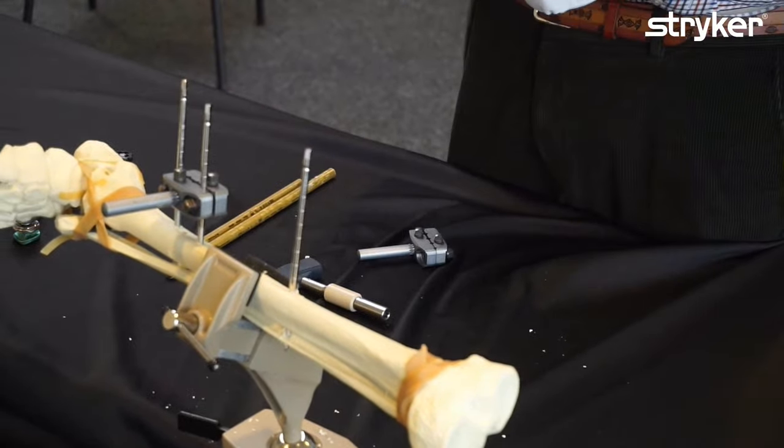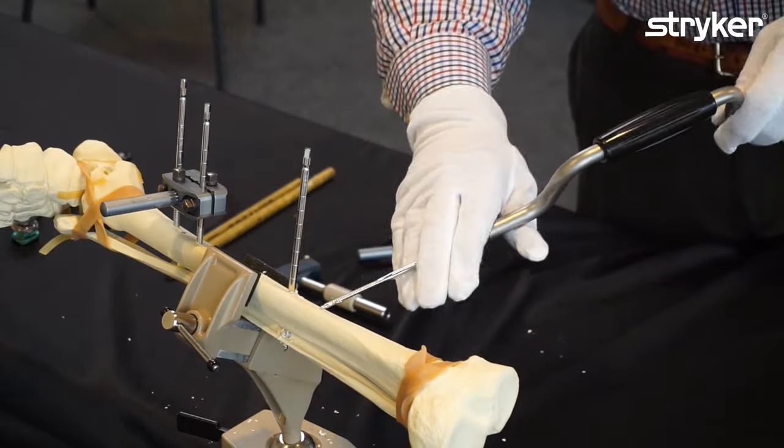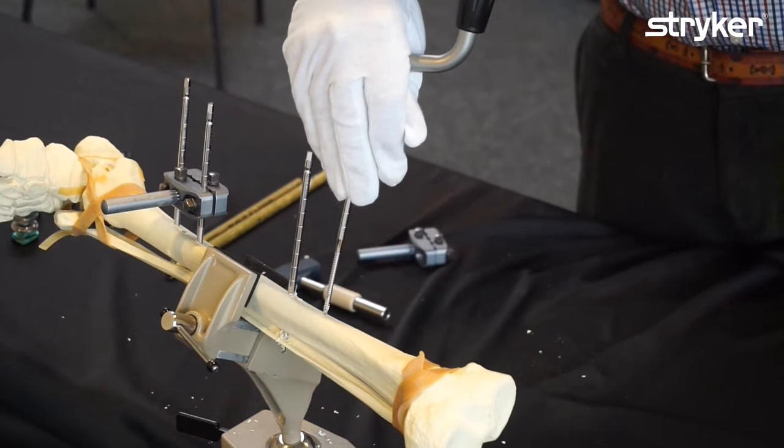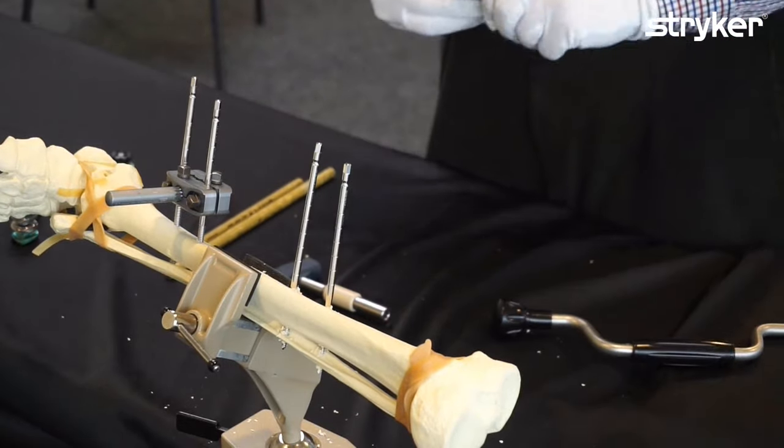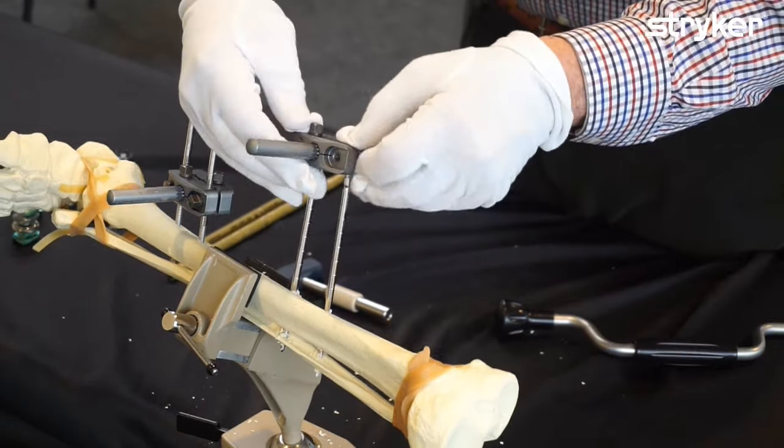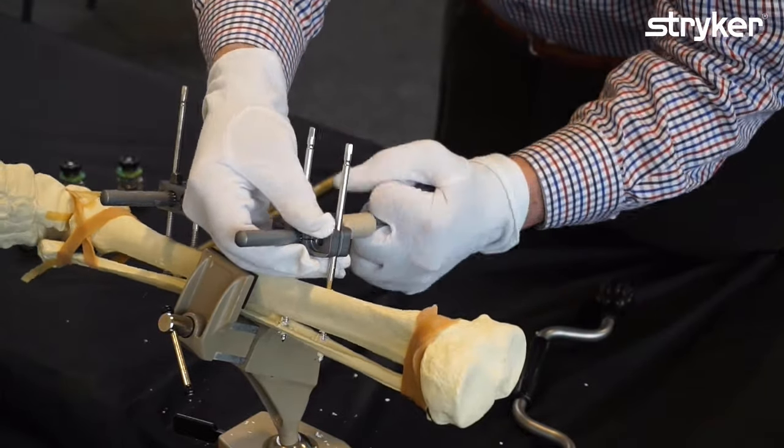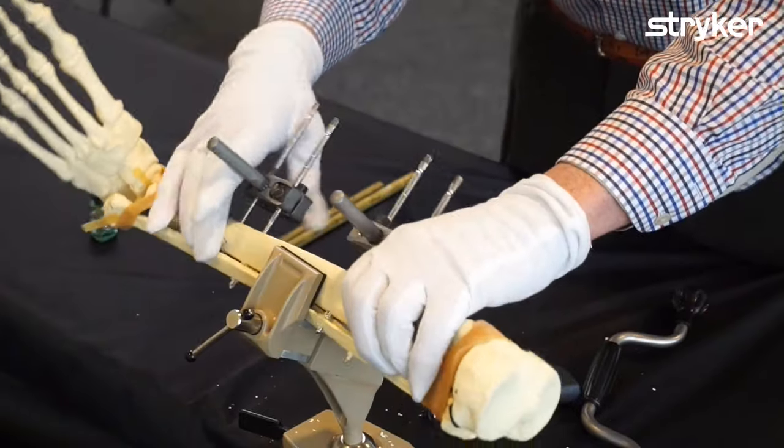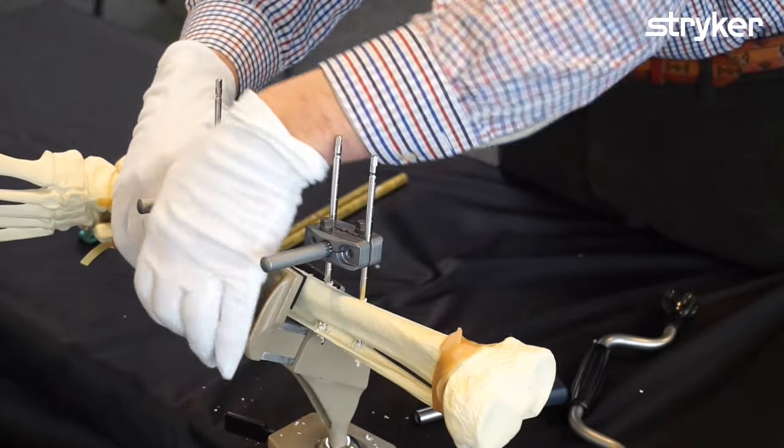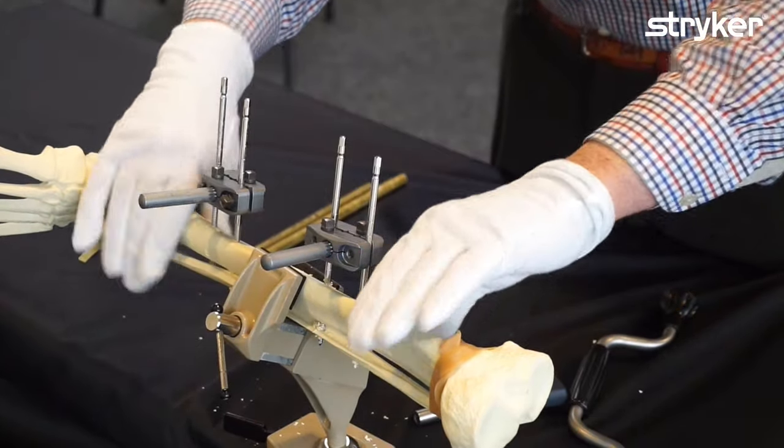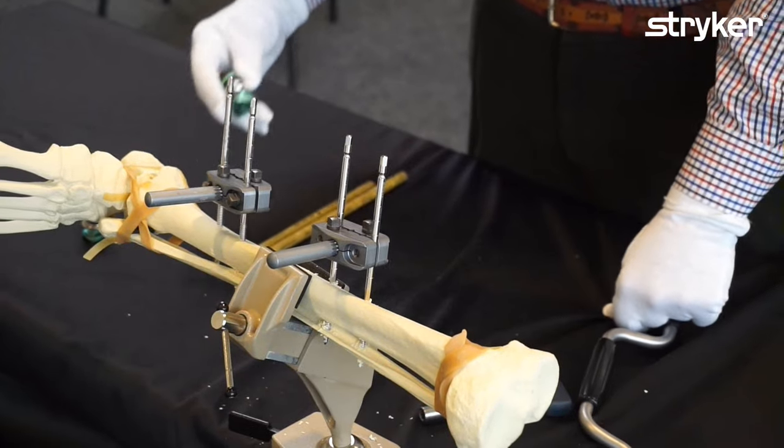Now we're going to make the other pin group. So now you can use the pin groups to reduce the fracture, to make the fracture as good as possible.